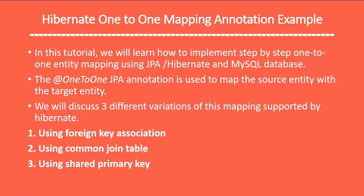I hope you understood all three variations of one-to-one mapping supported by Hibernate: foreign key association, common join table, and shared primary key. Let me know if you have any questions or issues in the comment section — I'll help you out. Thanks for watching, I'll see you in the next video.